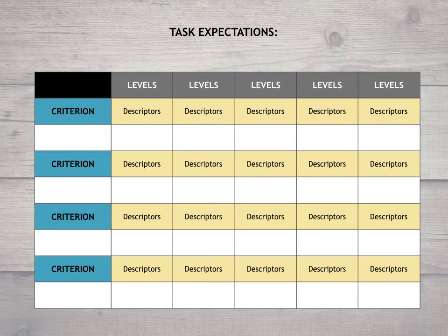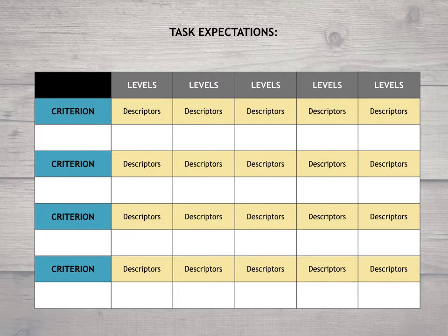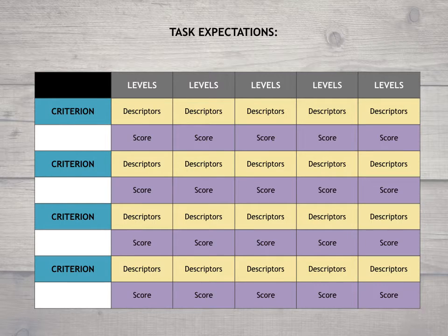Once you've done that, you then put in your descriptors. These descriptors will explain each level against the criteria. This is what takes the longest time — looking at how we define each of these descriptors. And then, of course, at the end we can put in a score and quantify each of these descriptors. That's how your final rubric will look.